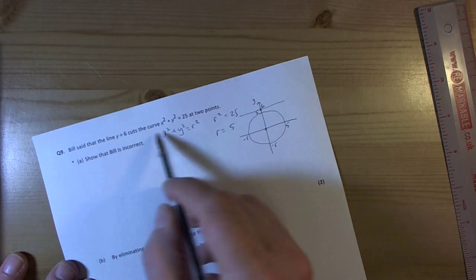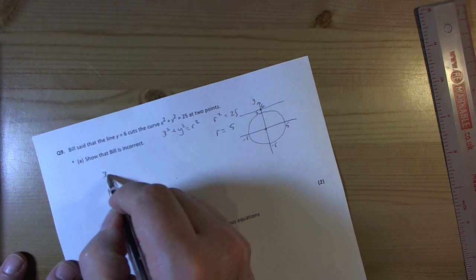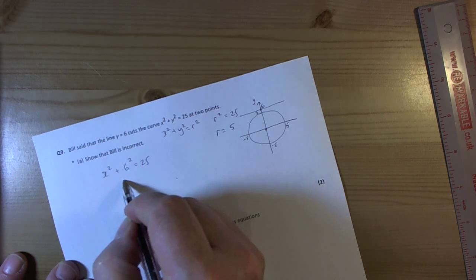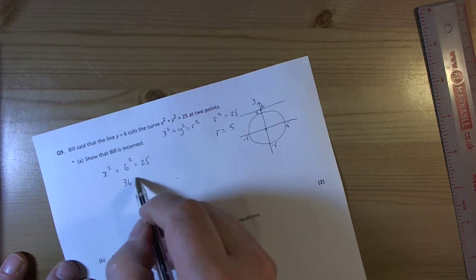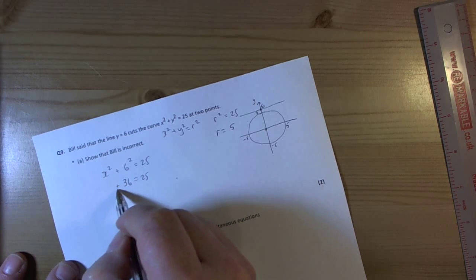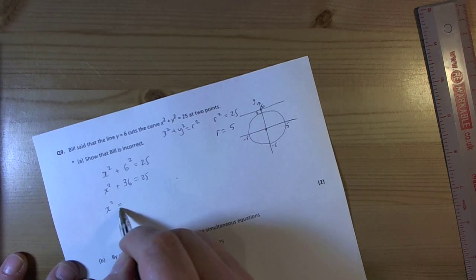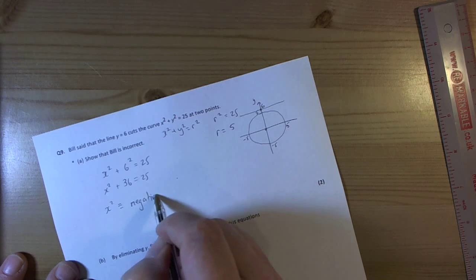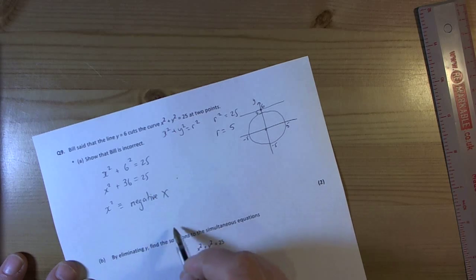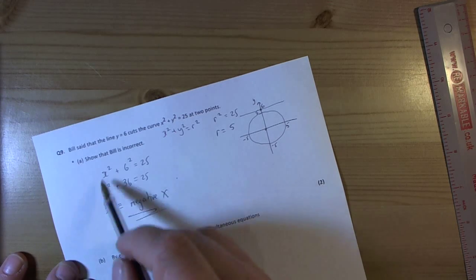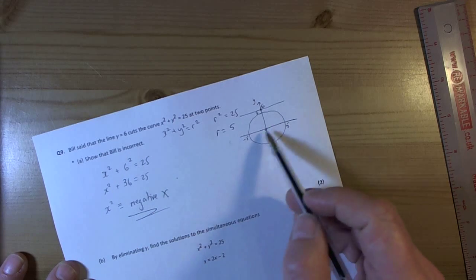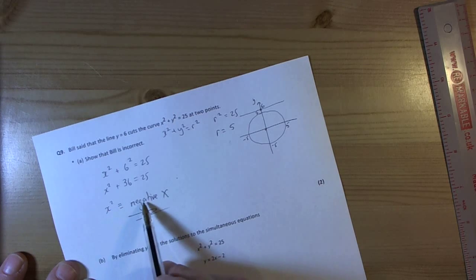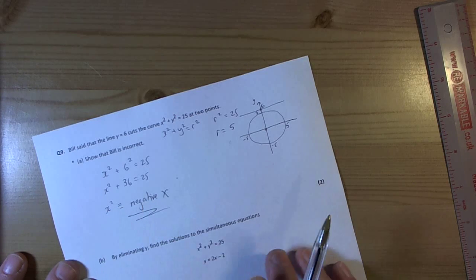Or we could put the value in and we could then see what happens. So x squared plus 6 squared equals 25. Well 6 squared is 36. That would mean that x squared has to be equivalent to a negative. Well we know that squaring always produces a positive result, so that isn't going to happen. So either way you can explain why Bill was incorrect. Picture, or go through putting the value in and recognizing that to have a squared value as a negative doesn't happen. So therefore it can't be correct.